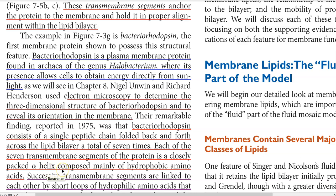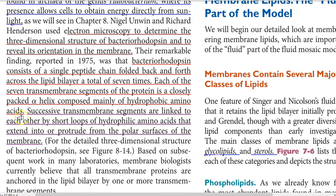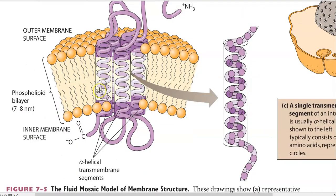Each transmembrane segment is a kind of alpha helix configuration composed mainly of hydrophobic amino acids. The successive transmembrane segments are linked to each other by short loops of hydrophilic amino acids that extend into or protrude from the polar surface of the membrane. In the diagram, the center shows hydrophobic amino acids in the alpha helix configuration, while whatever protrudes out is made up of hydrophilic amino acids. This is the arrangement of transmembrane helices in bacteriorhodopsin.